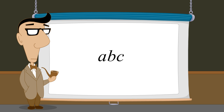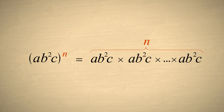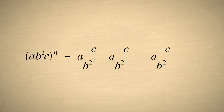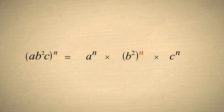So we see that raising any product of terms to a power is equivalent to raising each term individually to that power. Now what if a term in the expression has an exponent? For instance, let's say that instead of b, we had the term b squared. Once again, raising this expression to the nth power is equivalent to n copies of the expression multiplied together. Rearranging the terms, we have n a's, n copies of b squared, and n c's. The n a's can be written as a to the nth power, and the n c's can be written as c to the nth power. The n copies of b squared multiplied together is equivalent to b squared raised to the nth power.